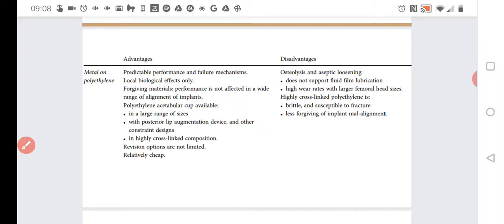What are the advantages? Generally it's predictable because we have a lot of data on how it behaves in real life. In general, polyethylene acetabular cups provide a large range of sizes, can have posterior lip augmentation device, and other constraint designs in highly cross-linked composition. Revision options are not limited, and it's relatively cheap.